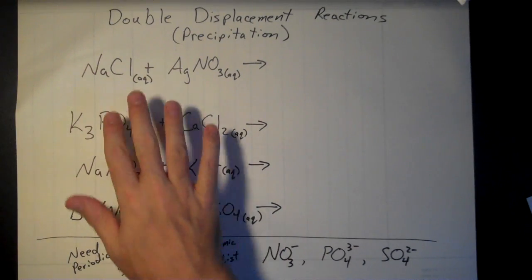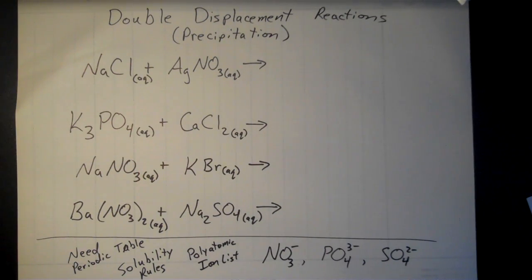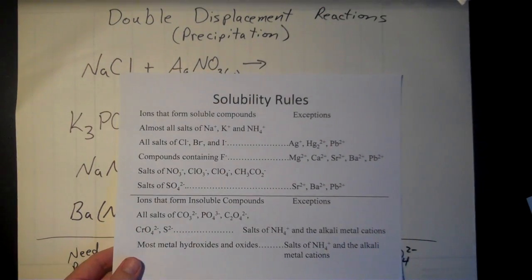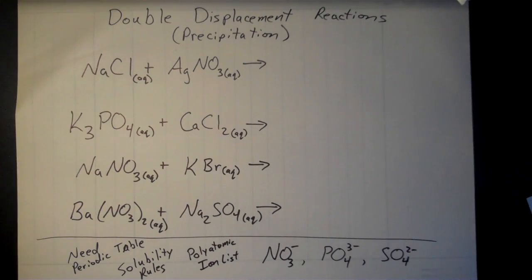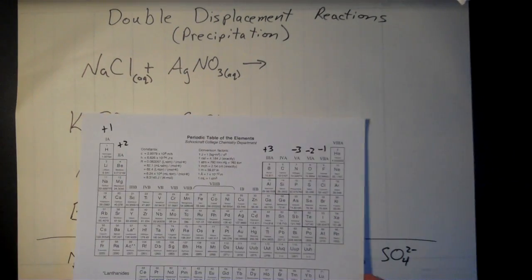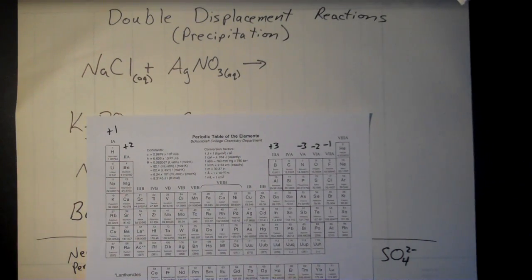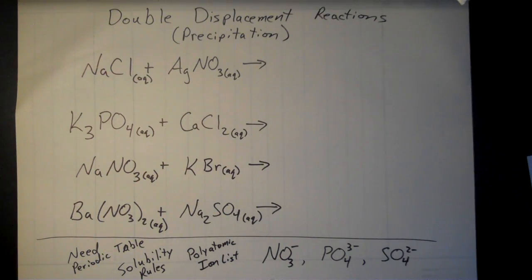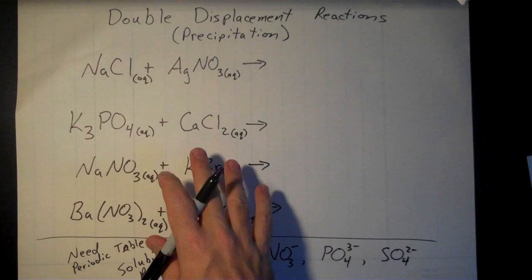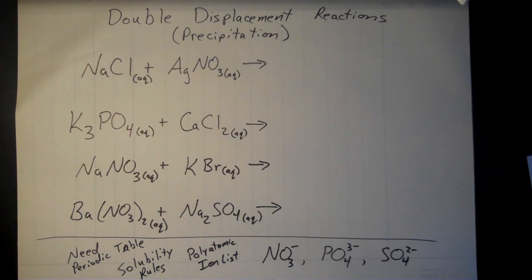Let's start with NaCl and AgNO₃. You're going to need a list of solubility rules — that's how we predict our products. This is an abbreviated version, so have that handy when practicing. You'll also need your periodic table showing positive and negative charges based on location. The charges don't change during this kind of reaction, so whatever charge an atom has on the reactant side it'll have on the product side.